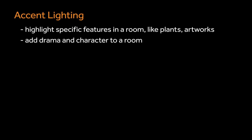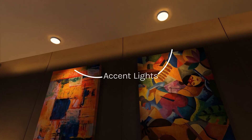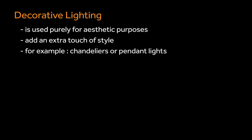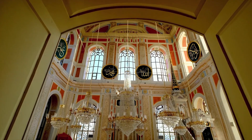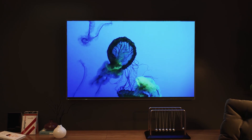Accent lights highlight specific features in a room like plants and artworks. They add drama and character to a room. These two down lights highlight the painting and act as accent lights. Decorative light is used purely for aesthetic purposes — they add an extra touch of style, for example chandeliers and pendant lights. Other lights include environment light and light from screens.